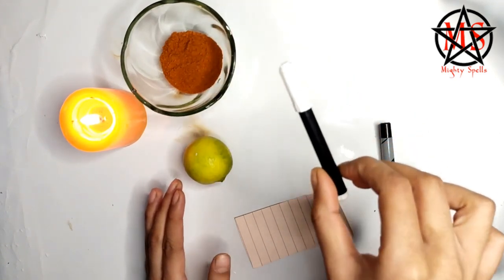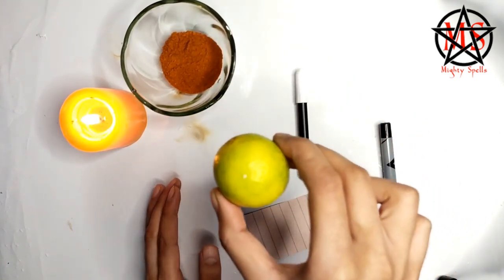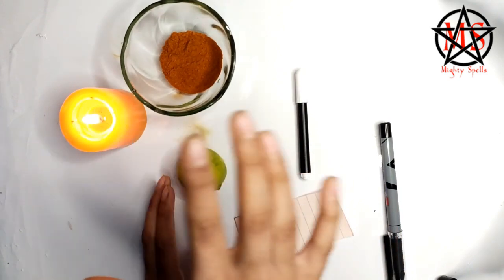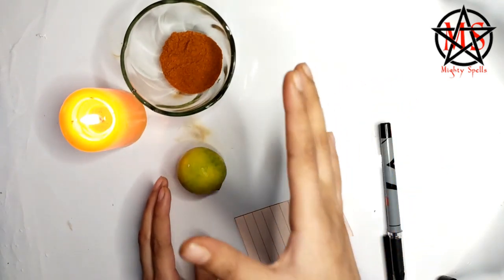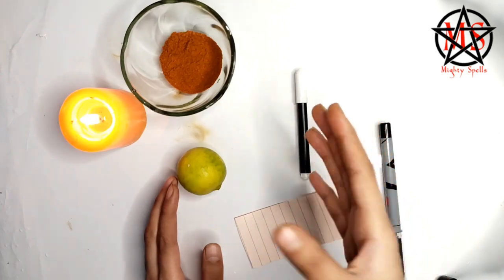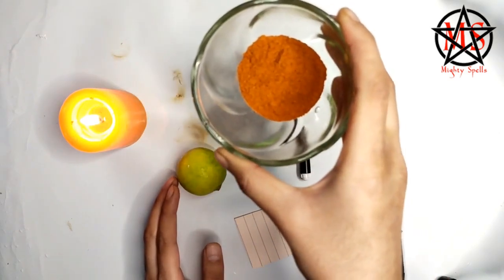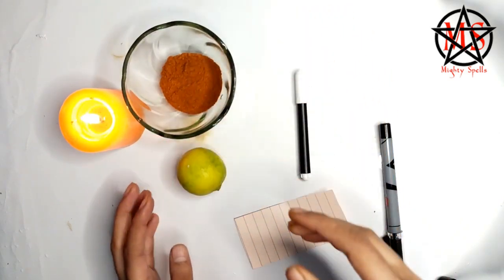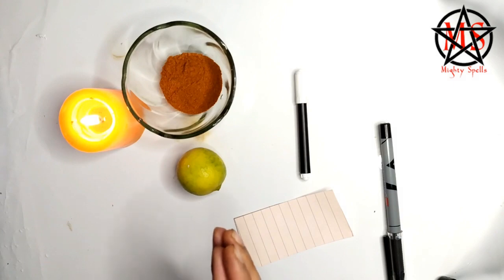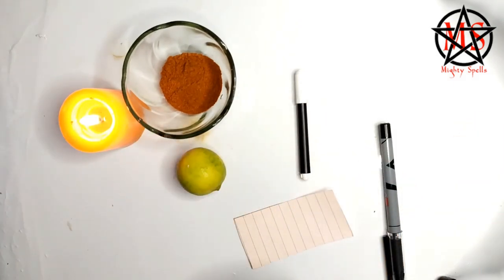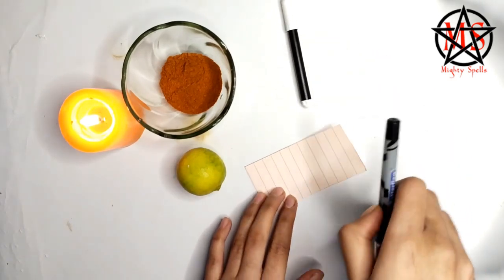...is a black pen, lemon, a candle by your side to gain energy to do the spell, red chili powder. That's all you need to do this spell. Now let's get started. Firstly, I want you to take a piece of paper.